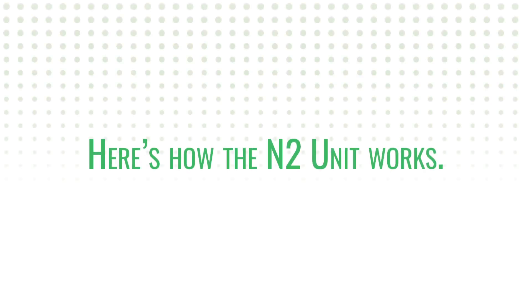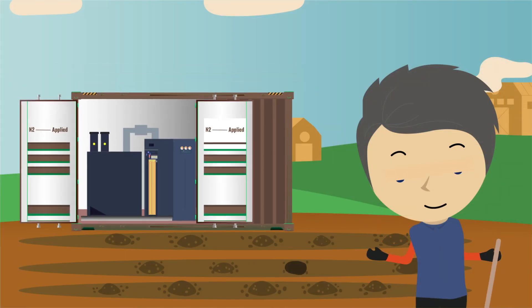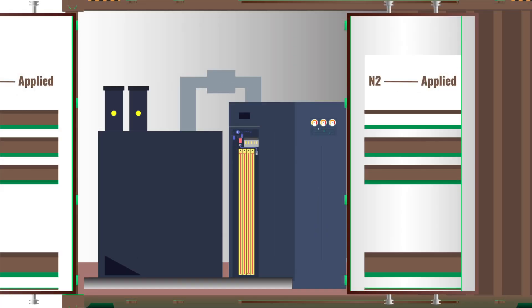Here's how the N2 unit works. Firstly, farmers put manure from their animals into the unit. Then we activate the air in it by applying electricity.